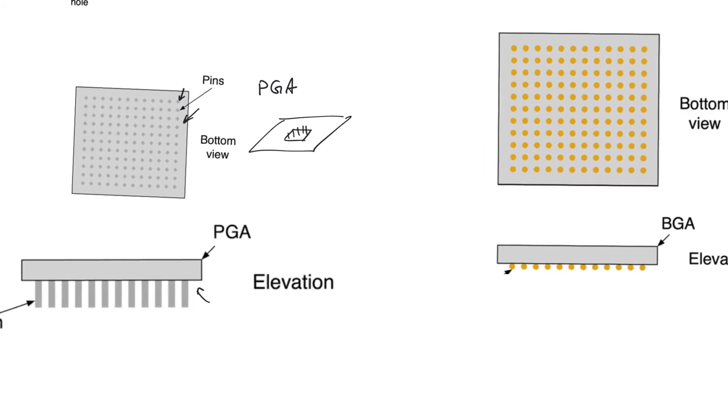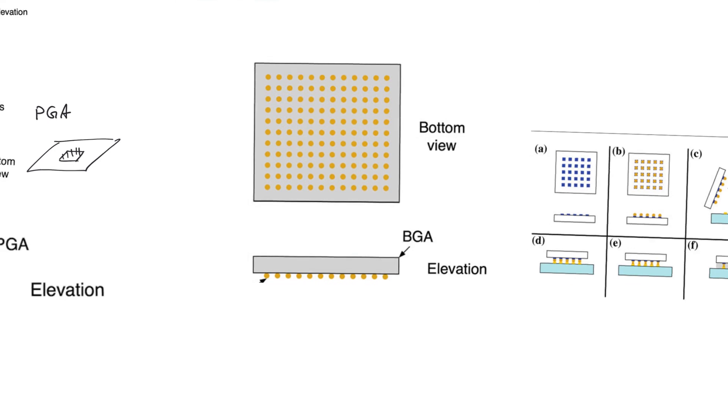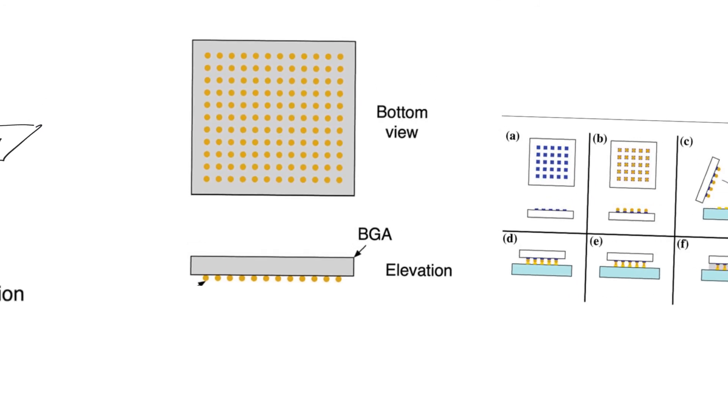The ultimate kind of package is the ball grid array package. This allows even more density than pin grid array packages. Again, it uses the bottom of the package for pins.